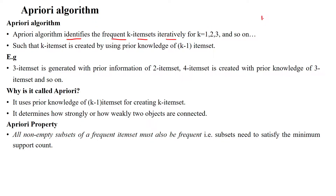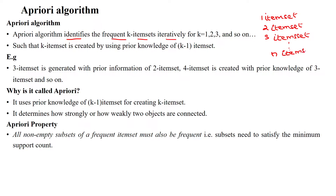That means the one-itemset will be generated first, then the two-itemset will be generated from the first itemset. From the second itemset, we can create the three-itemset. We can keep going until the n-itemset. The frequent itemset can be created by using the prior knowledge of the k-minus-1 itemset.